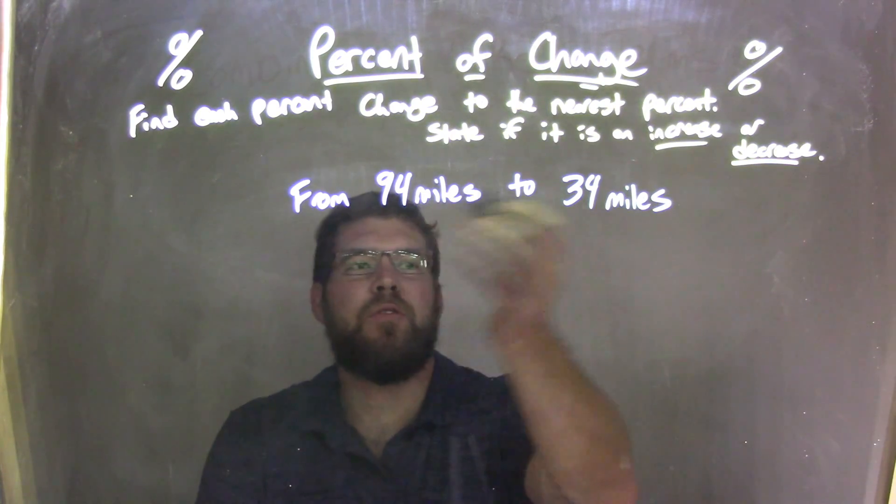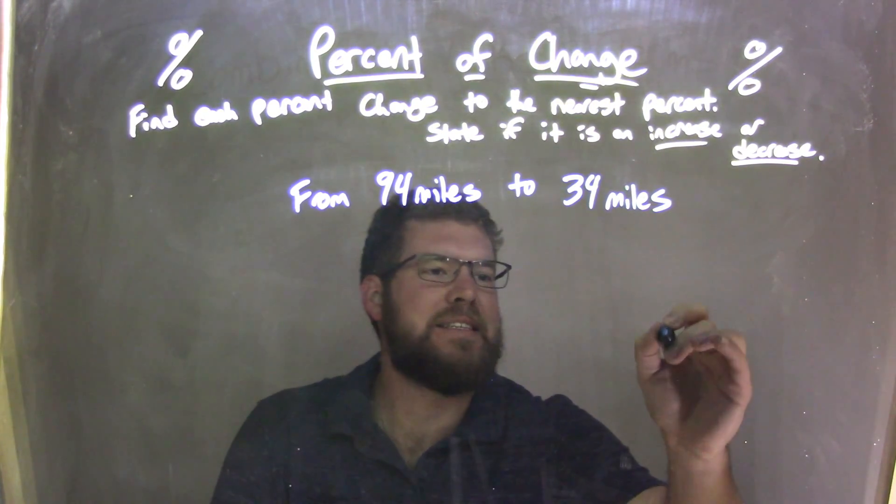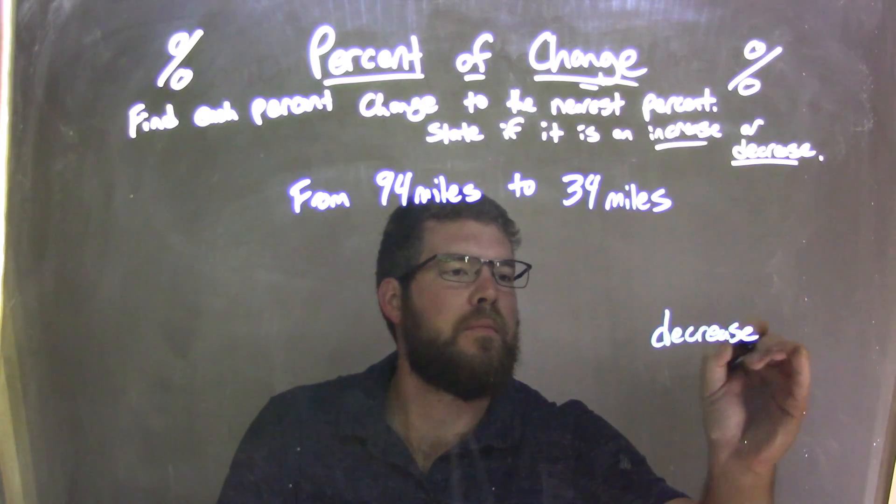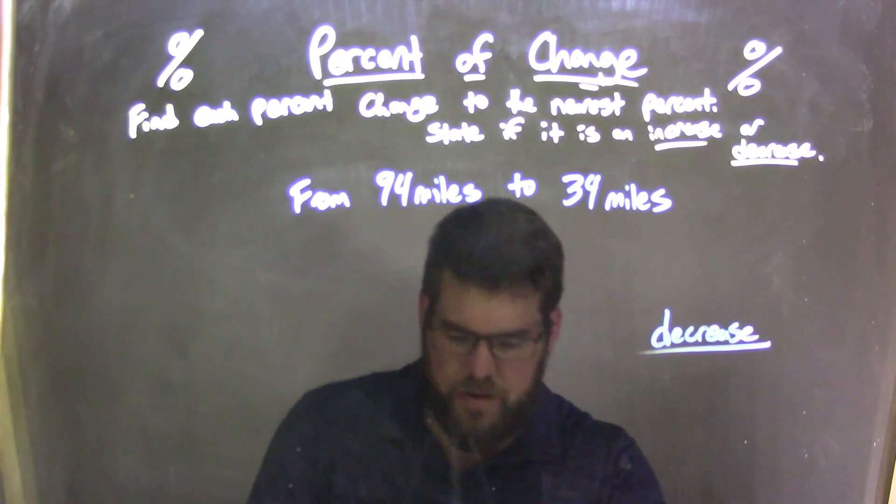We're going down, right? 94 is greater than 34. So, that's a decrease.